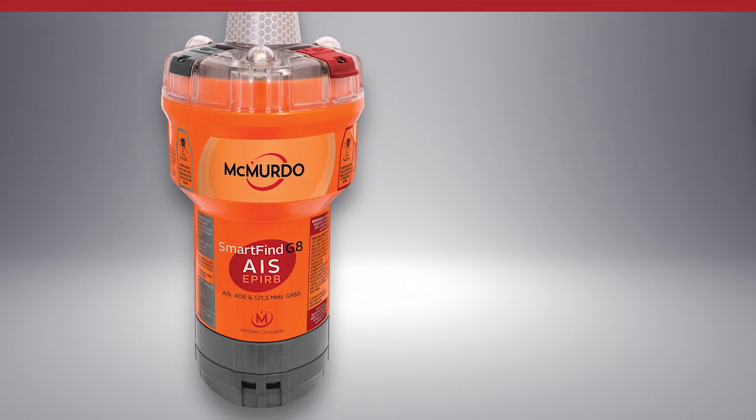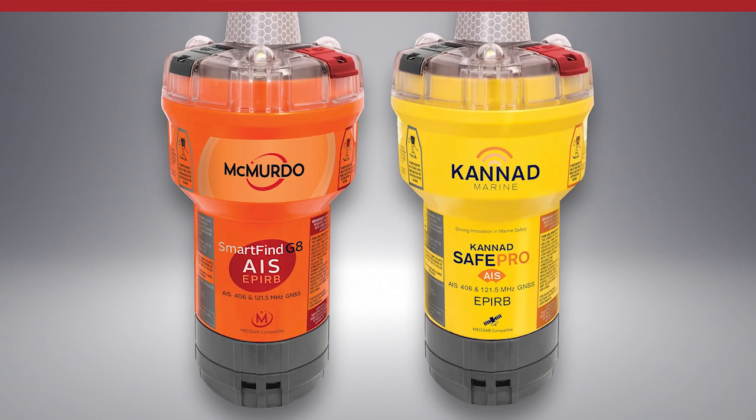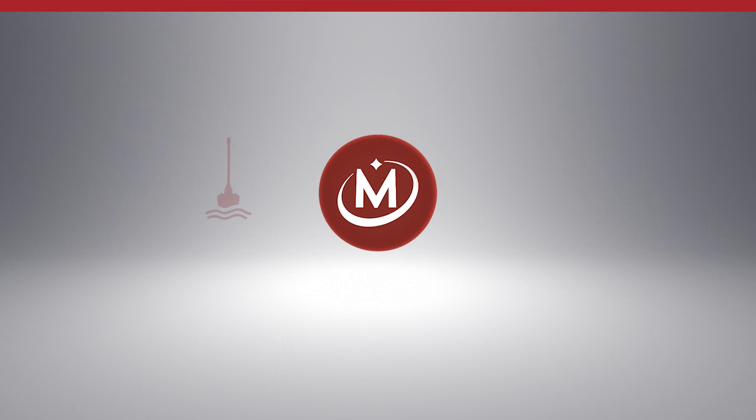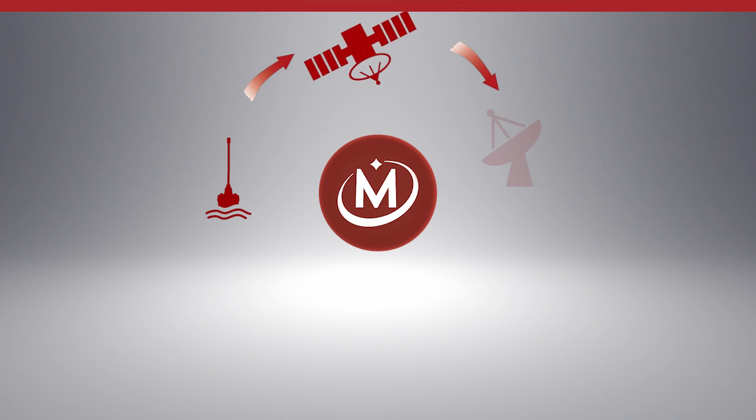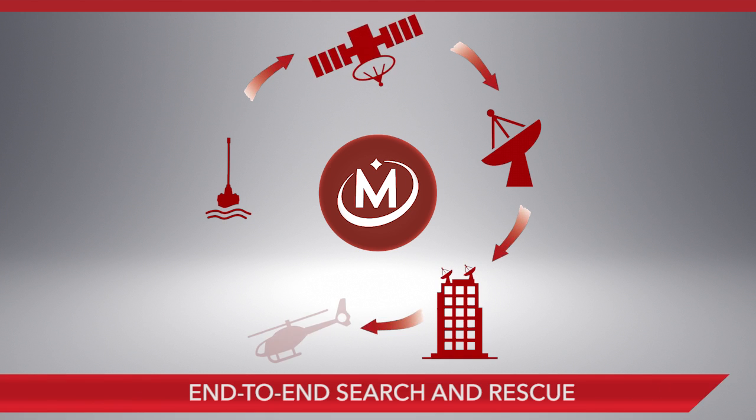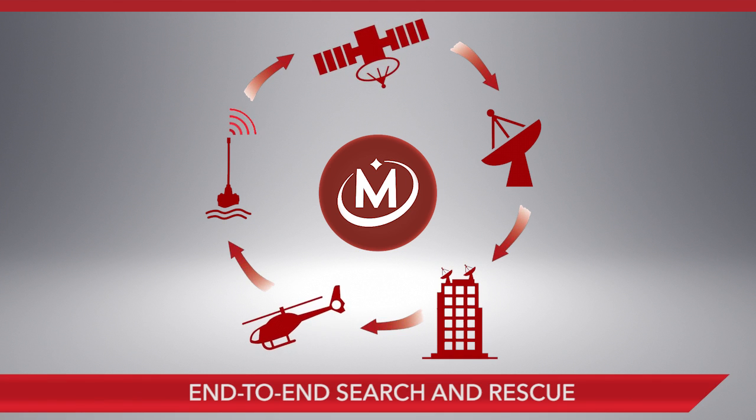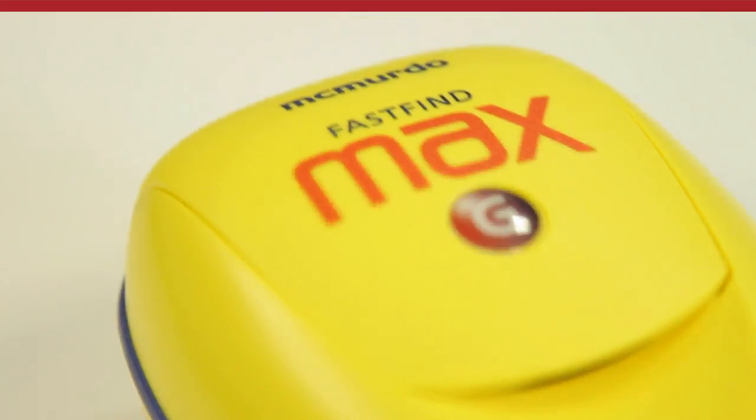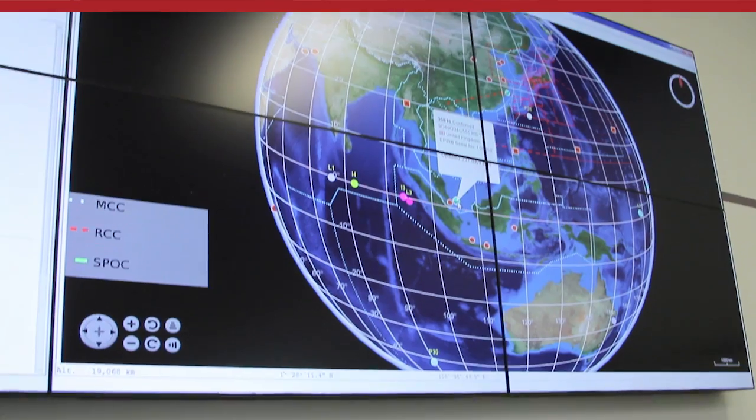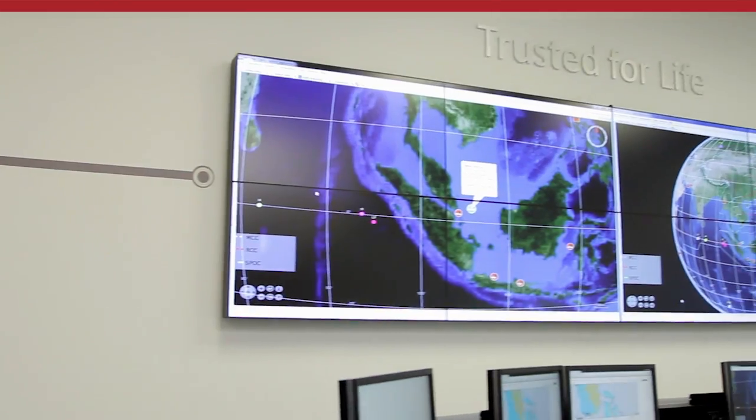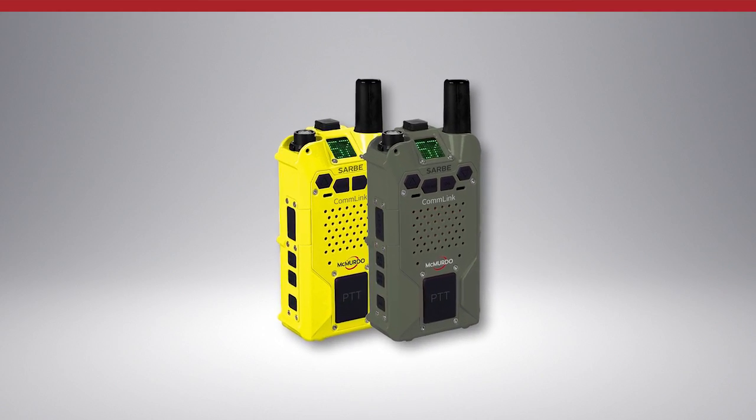Finally, the SmartFind G8 and Canad SafePro EPIRBs are part of the powerful McMurdo ecosystem. McMurdo is the only provider of an end-to-end search and rescue ecosystem, including distress beacons, satellite ground stations, mission control and rescue coordination center systems, and rescue response products.